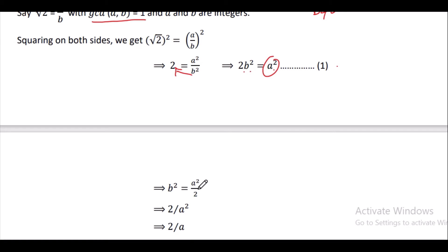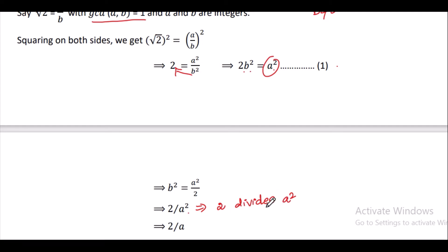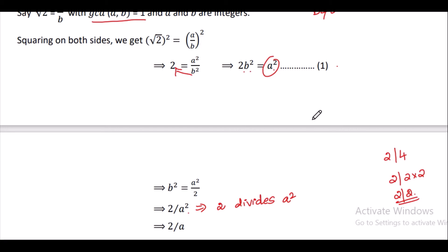From equation 1, since 2b squared equals a squared, we can say 2 divides a squared. For example, if 2 divides 4, then 4 equals 2 × 2, so 2 divides 2. There is a statement: if a number divides a squared, then that number also divides a.